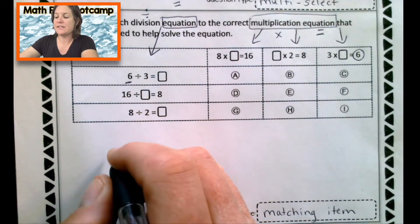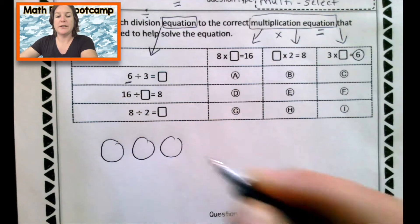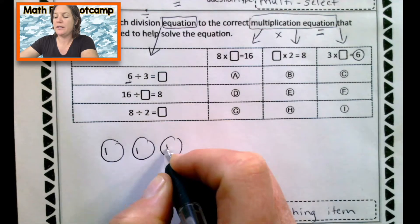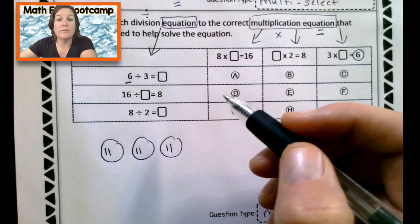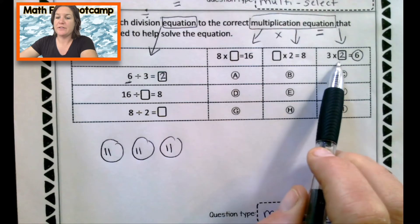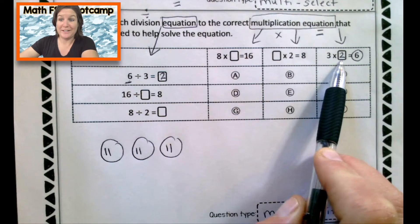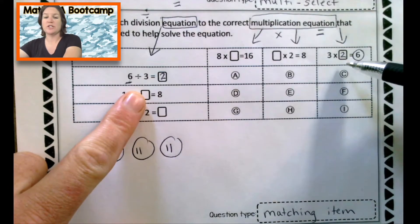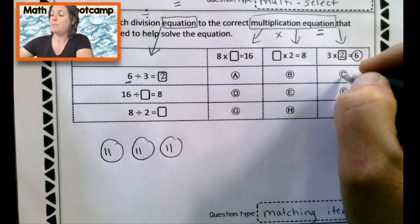All right. So if I have six total divided into three groups, so one, two, three, and I'm dividing it out. So I have six total divided into three groups. That would be one, two, three, four, five, six. So what is my unknown value? Right. It's two. And so does that mean that here, if this is true, are there three groups of two? Yep. Equals a total of six. Yes. So these two, this division equation matches this multiplication equation at letter C. So let's go ahead and mark that.